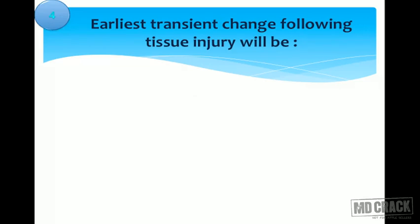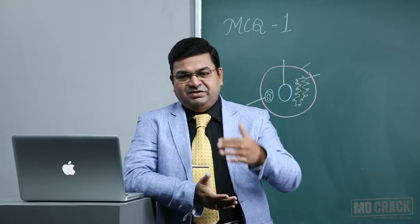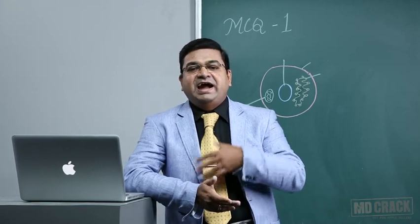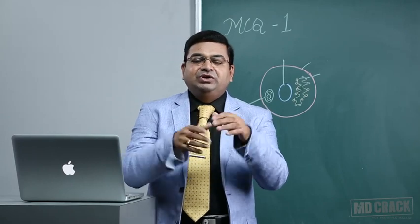Fourth question: what is the earliest transient change following tissue injury? Options are neutropenia, neutrophilia, monocytosis, or lymphocytosis. The answer is neutrophilia. Neutrophils are the first cells to enter circulation in response to tissue injury. In acute appendicitis, for example, a blood sample showing neutrophilia adds to the diagnosis.